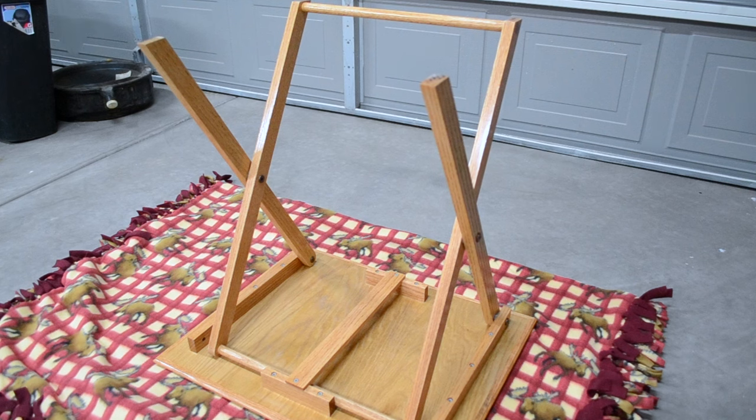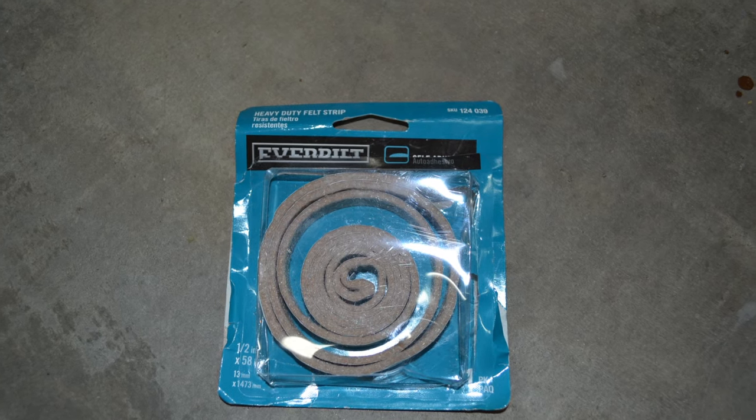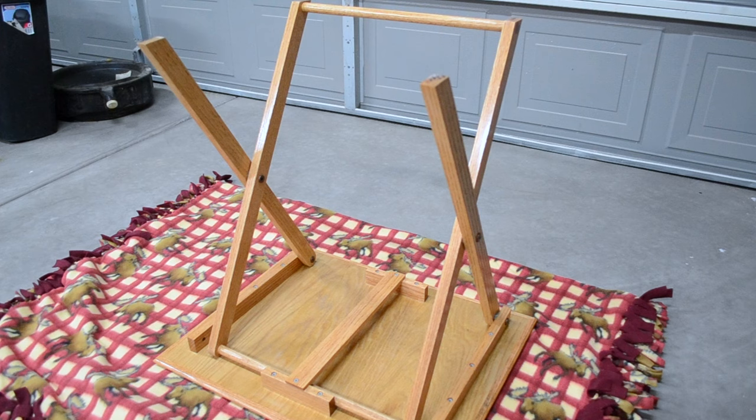So now that I've got the tray all finished up, and partially put back together in a temporary state, one thing I'm going to do to prevent any scratching on the floors or anything like that, is I'm going to use half inch felt strips to put on the bottom of each leg that will allow it to slide nice without having any gouges in the ground.